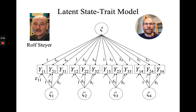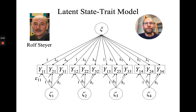Based on that, we can define R-squared type coefficients that reflect consistency — the proportion of variance in a measure that is trait variance — occasion specificity, which is the proportion of variance reflecting situation and/or person-by-situation effects, and measurement error or unreliability. I'll show you on the next slide how those are calculated based on the model parameters.